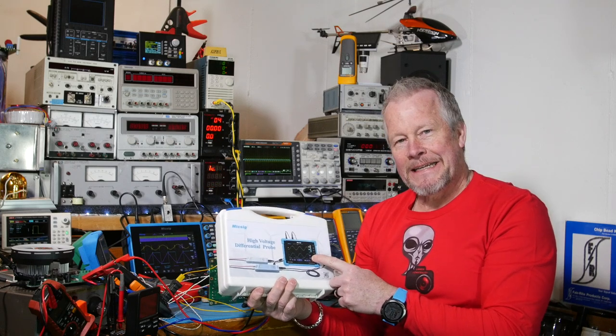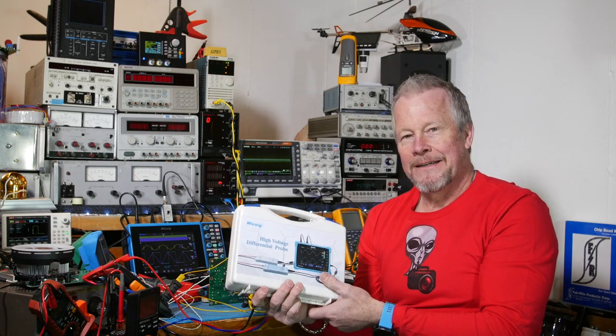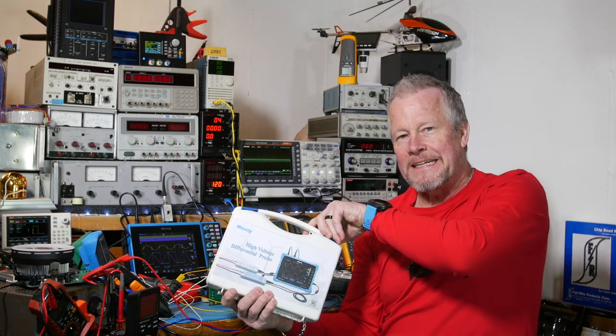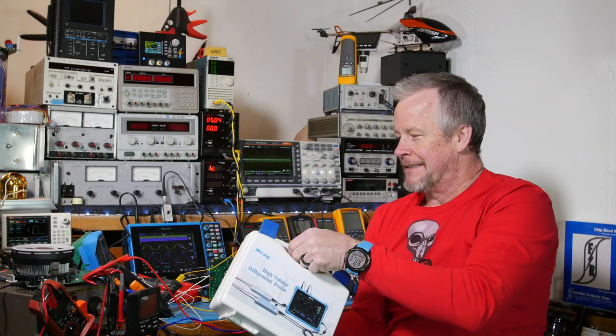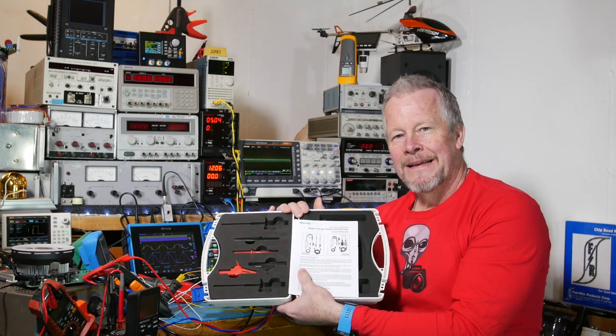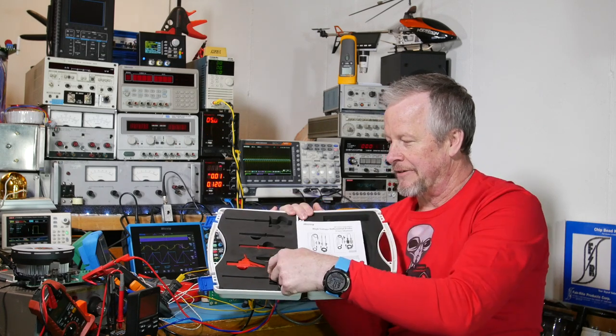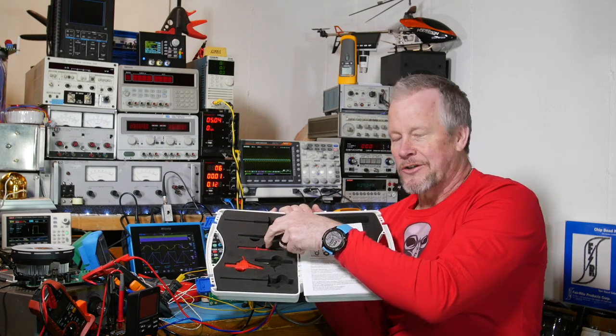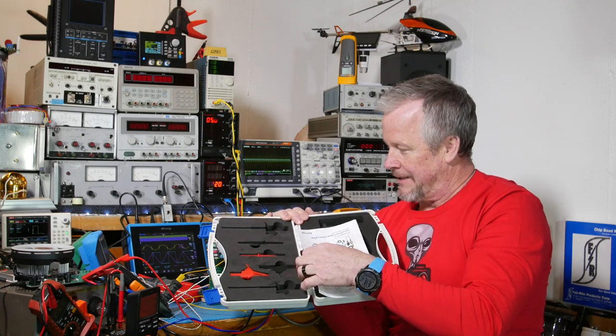So Micsig came out with another version that had a lower range. Look at these nice boxes the Micsigs come in. These nice little plastic boxes, they come with the little place for the probes. These are the kind of probes I generally use, like your multimeter probes, and then you got your alligators.